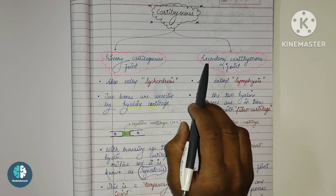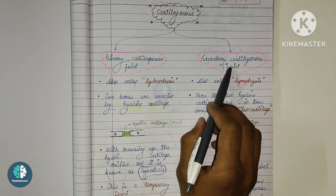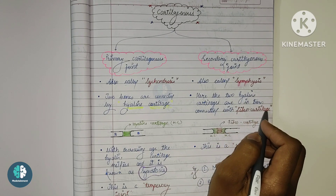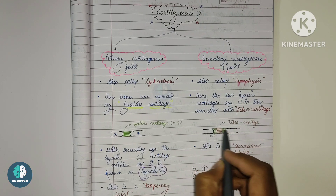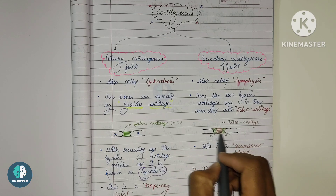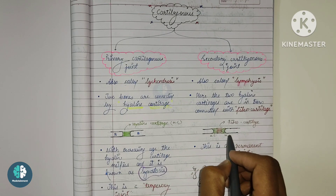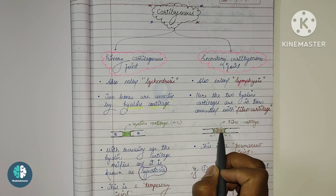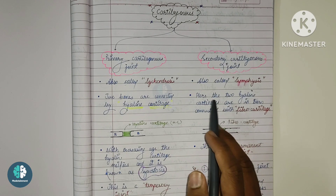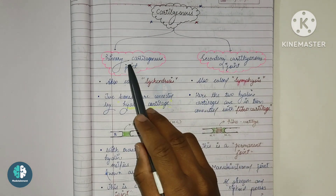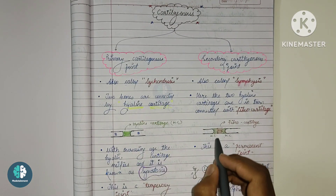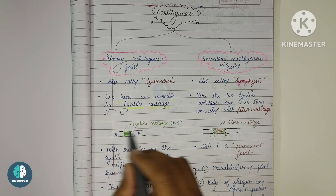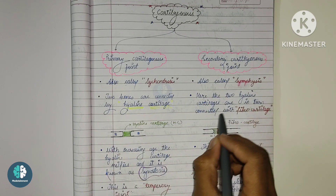In the secondary cartilaginous joint, the two hyaline cartilages are in turn connected with fibrocartilage. So the bones are there, the hyaline cartilage is also there, but in between the two hyaline cartilages we can see fibrocartilage. That differentiates the secondary cartilaginous joint from the primary one. The primary has only hyaline cartilage between the bones, while the secondary also has fibrocartilage.